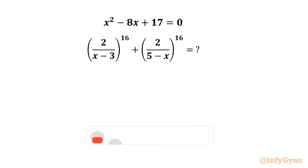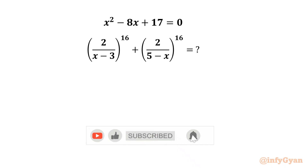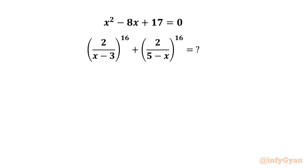Welcome to Infigyan friends. Today in this video we will be solving another very interesting and challenging question from algebra. Here we have a quadratic: x squared minus 8x plus 17 equals 0. We need to find the value of 2 over (x minus 3) whole power 16 plus 2 over (5 minus x) whole power 16. So let's get started — let the required expression be E.